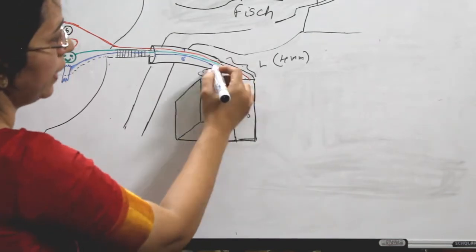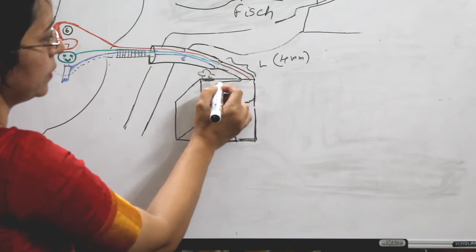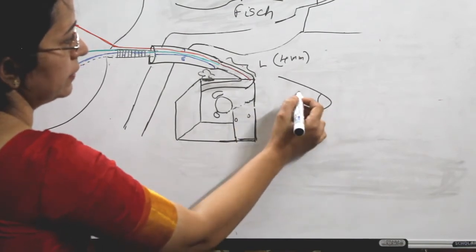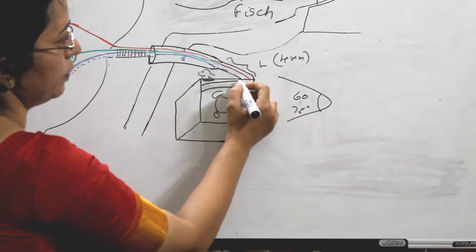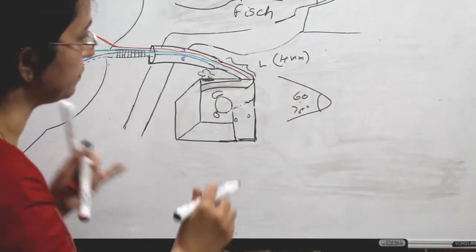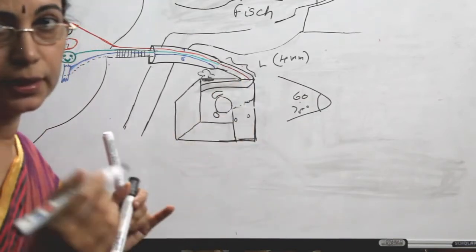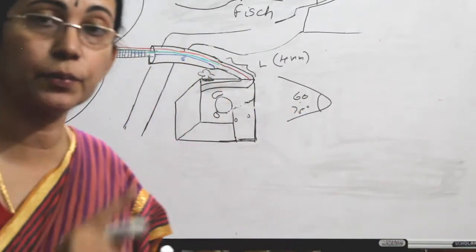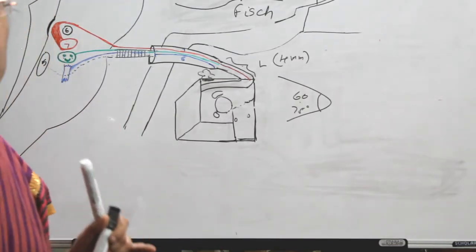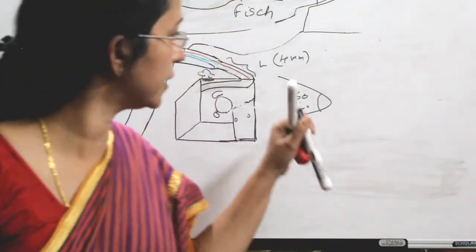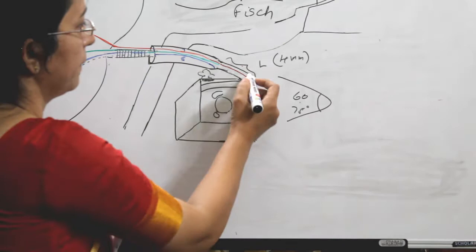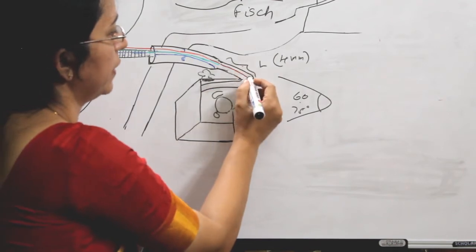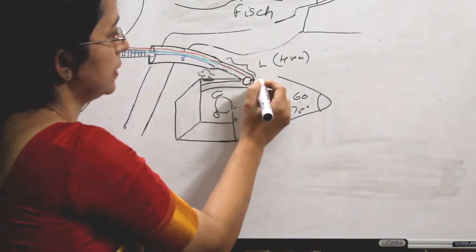On reaching the medial wall of the middle ear, the facial canal turns backwards, forming an acute angle of around 60 to 75 degrees. This curvature of the turning we call the genu — this is the first genu, the external genu. There is also an internal genu, which is at the lower border of the pons. The external genu is at the anterosuperior wall of the medial wall of the middle ear, and here there is one more ganglion — the geniculate ganglion.